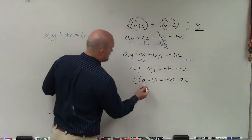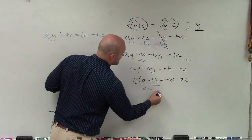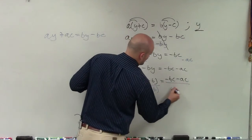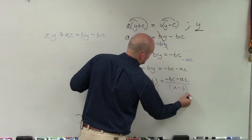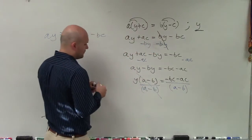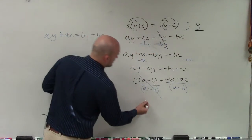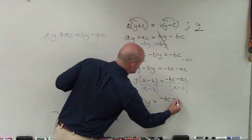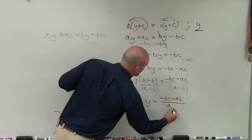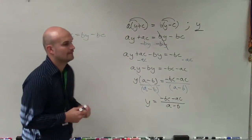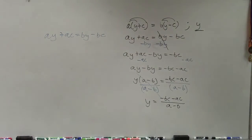So to undo multiplying by an expression, I need to divide by the expression. Therefore, my final answer is y equals negative bc minus ac all over a minus b. All right, thank you.